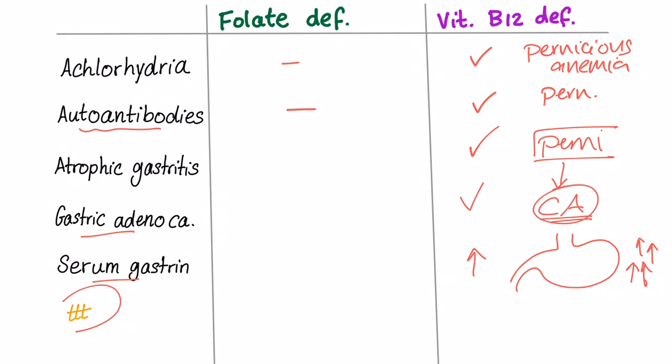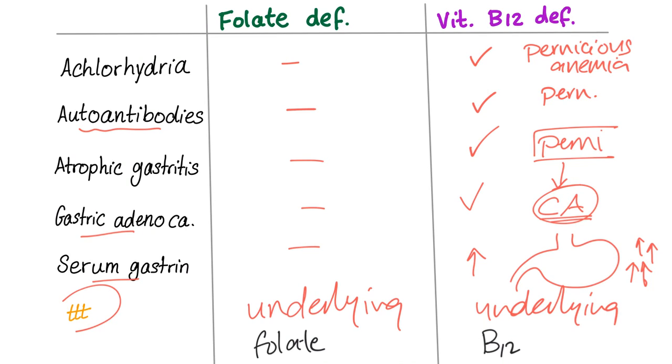How to treat folate deficiency and B12 deficiency? Easy. First, you have to correct the underlying disease in both of them. If it's a medicine, stop the medicine. If it's another disease, try to treat it. And then in folate, we give folate, usually oral. And with B12, we give B12, usually intramuscular. I hope it's clear. It's so easy.